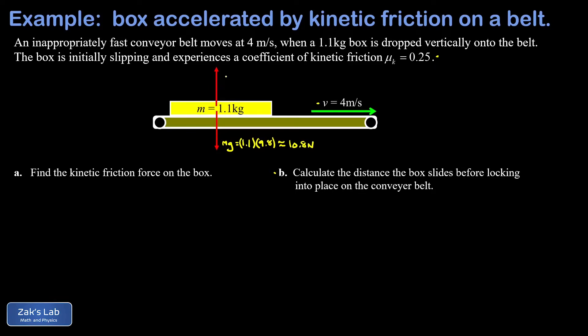Pointing up, we have the normal force exerted on the box by the conveyor belt. Because there are no other vertical forces, the normal force must exactly balance the weight, so it also has a magnitude of 10.8 newtons.